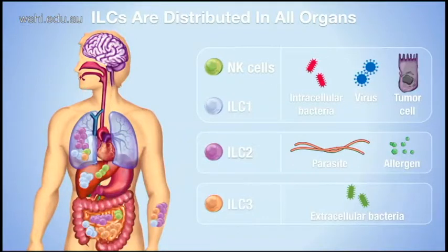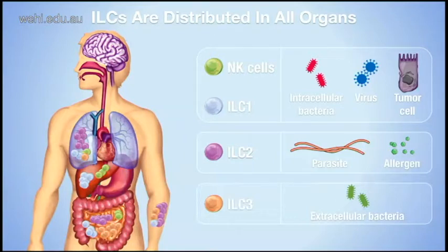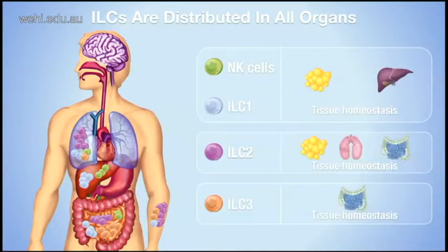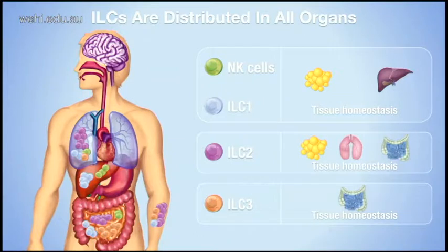Because of their cytokine profile, each ILC subset is important to fight typical threats. NK cells and ILC1 are important for intracellular bacterial and antiviral responses, and NK cells are extremely important for antitumoral responses. ILC2 are important for type 2 immune responses and fighting parasites, but have also been linked to the initiation of allergy. ILC3s are important for extracellular bacteria. Beyond immunity, because they reside within these tissues, ILCs also play a critical role in the homeostasis of the organs themselves.